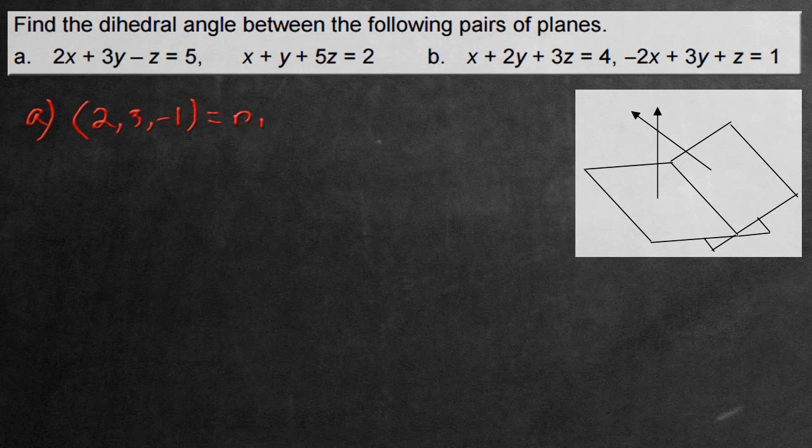Now for the next one, we have 1, 1, and 5, and this is the normal for the next one, n1. Now all we do is find the angle between them.